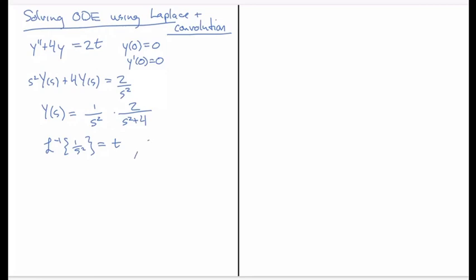The inverse transform of 1 over s squared is just going to be t, and the Laplace inverse transform of 2 over s squared plus 4 is going to be sine of 2t. Now that I want to solve this equation, I don't have to do any serious monkeying around with those functions. I can just write down that if this one is f of s and this one is g of s.